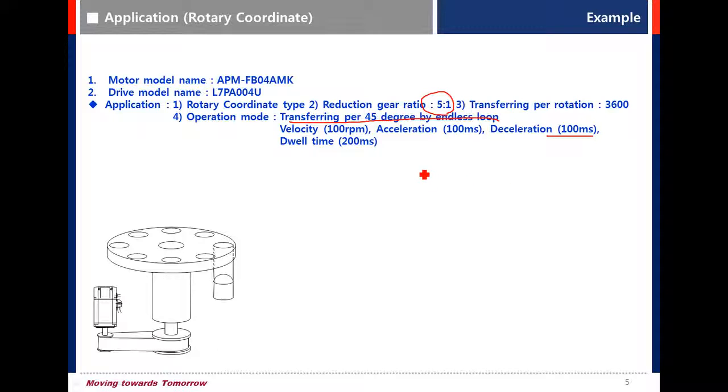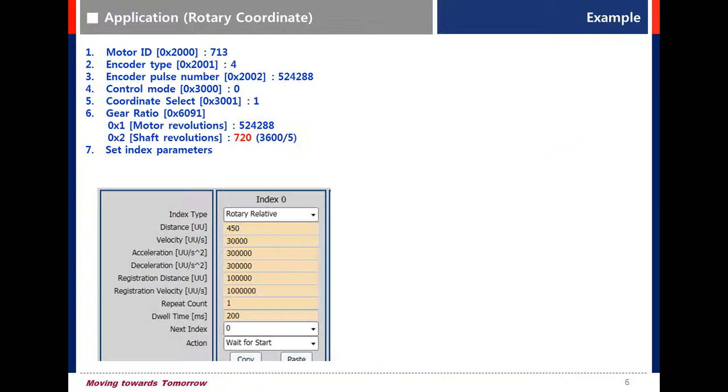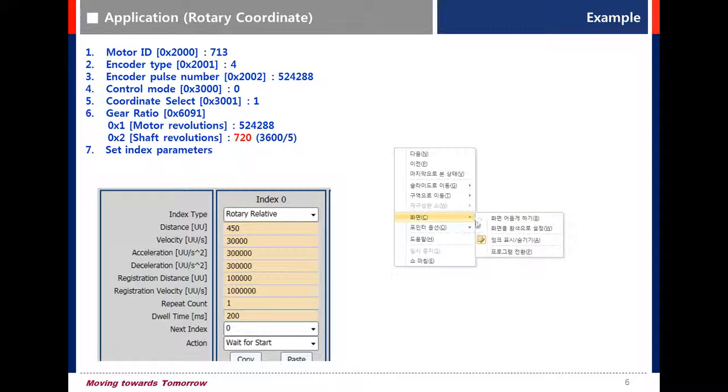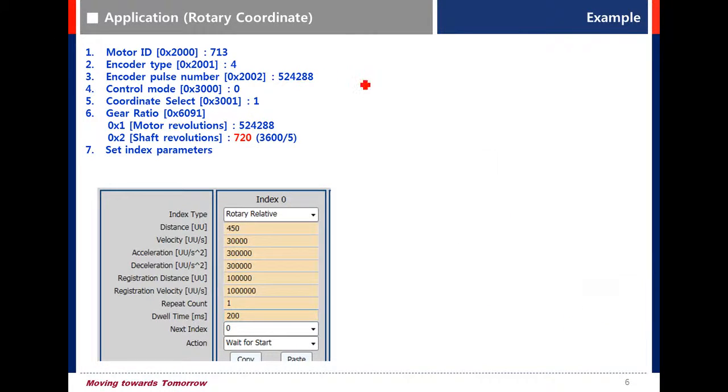First of all, set motor ID, encoder type, and encoder path number. You can check the motor ID on the label of the motor.